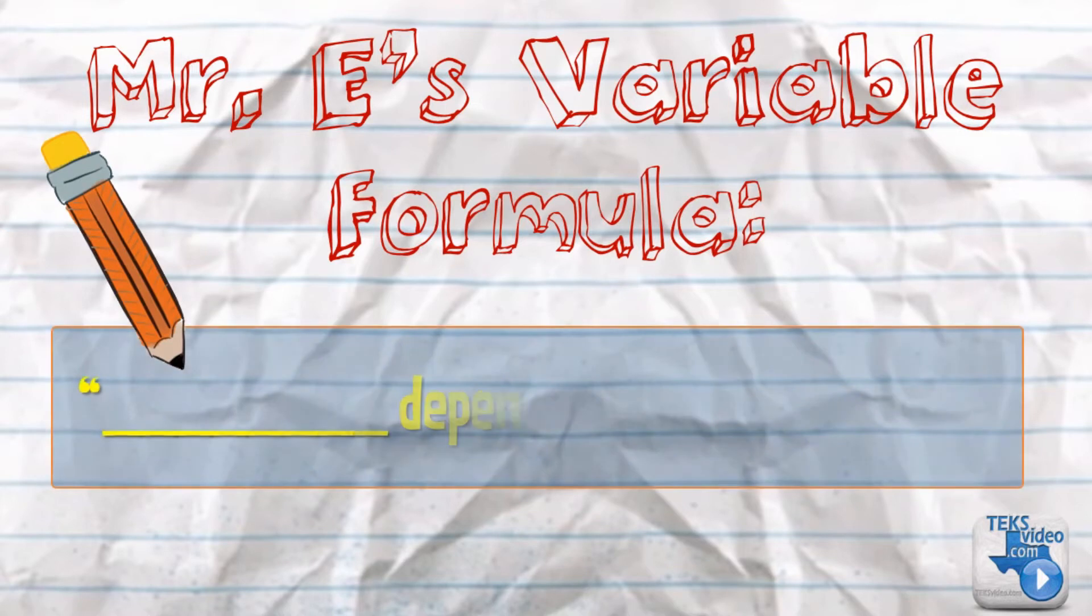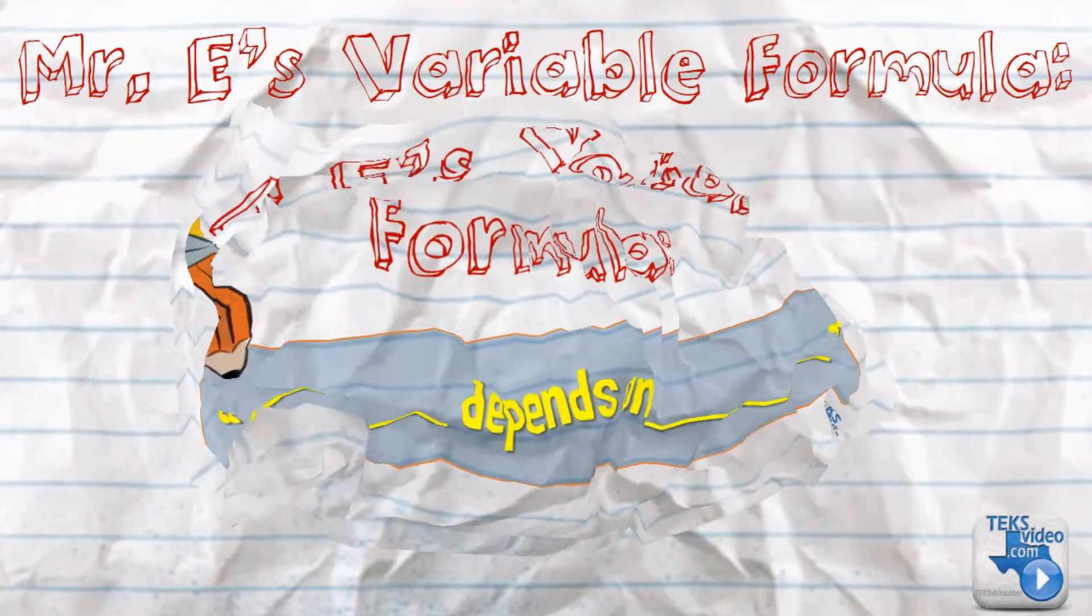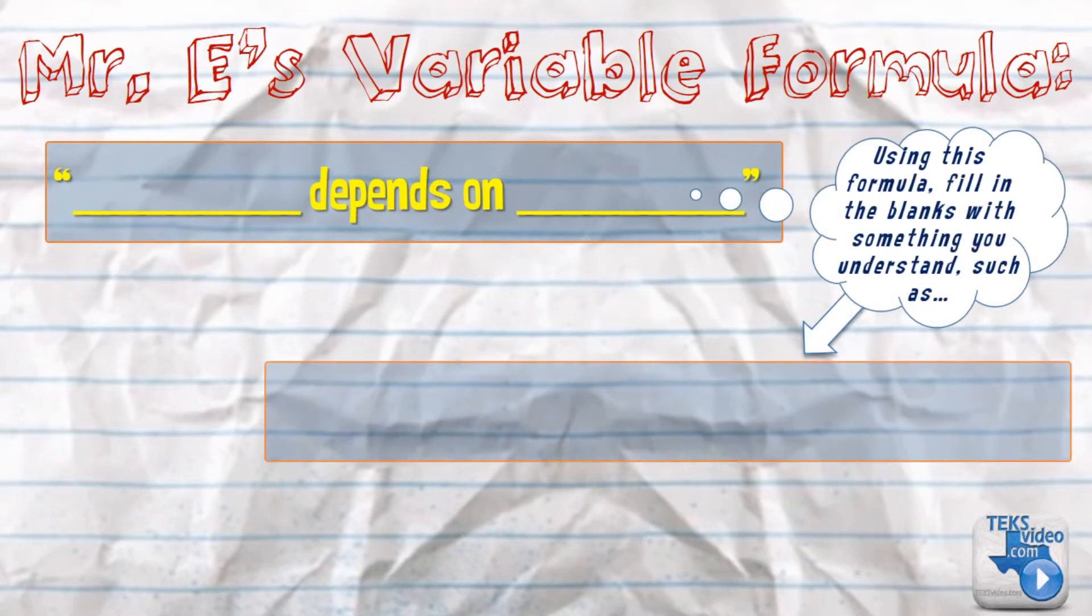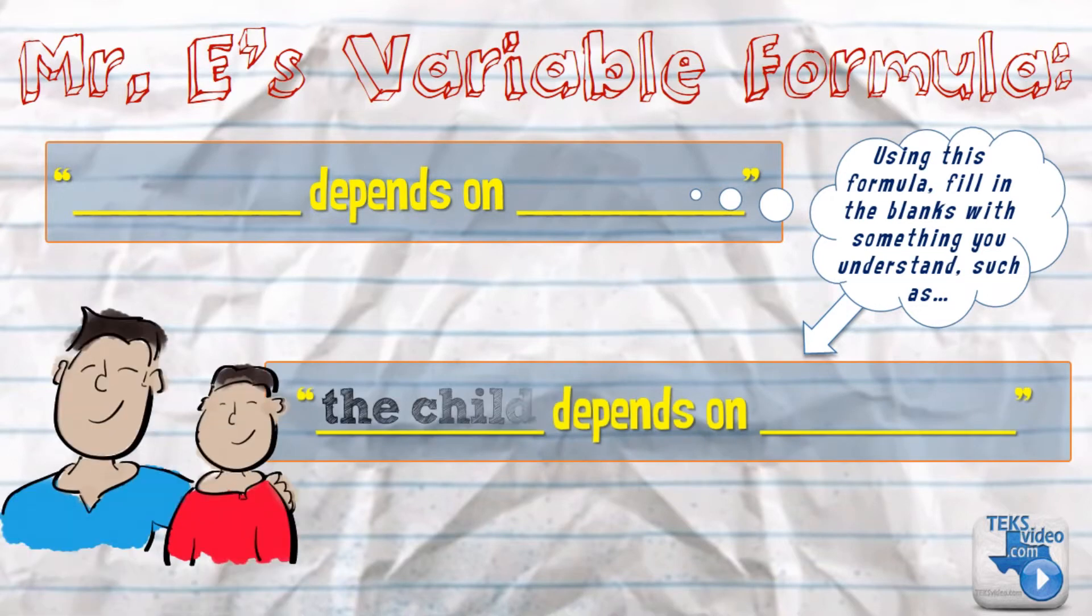Blank depends on blank. Now, using this formula, fill in the blanks with something you understand, such as the child depends on the parent.